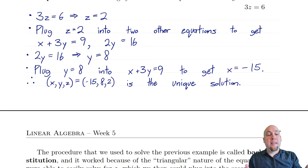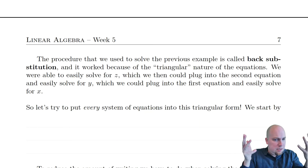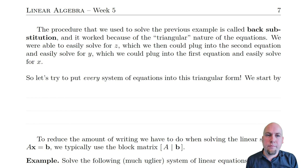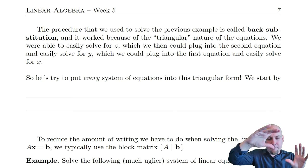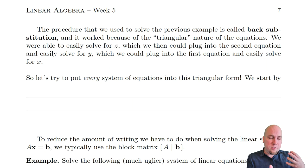That method we just went through is called back substitution, and it works when your linear system has this triangular form. We'll pin down exactly what we mean by triangular form in the next lecture, but for now just follow along with the examples to get a feel for how it works. Hopefully it seems at least somewhat believable that if your linear system has this triangular form, we know how to solve it using back substitution.